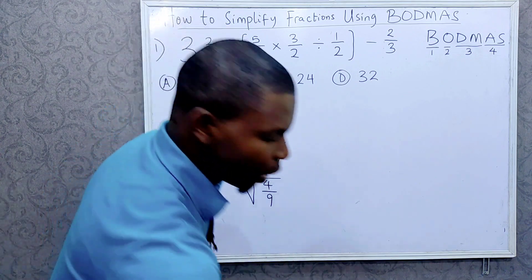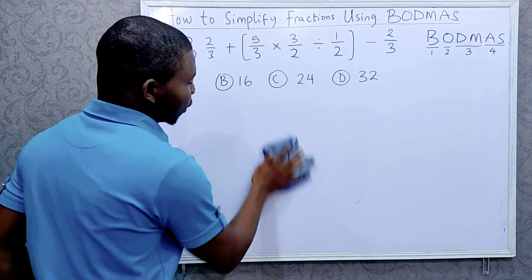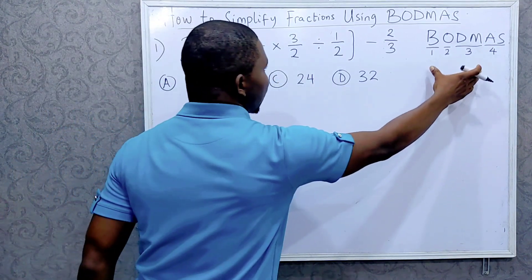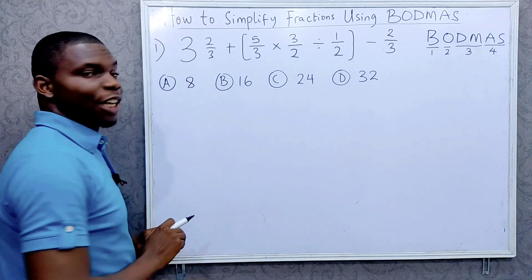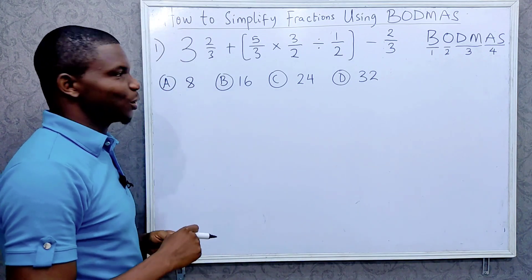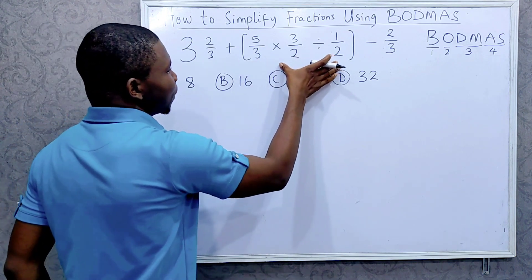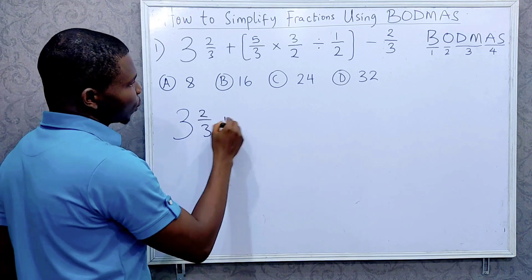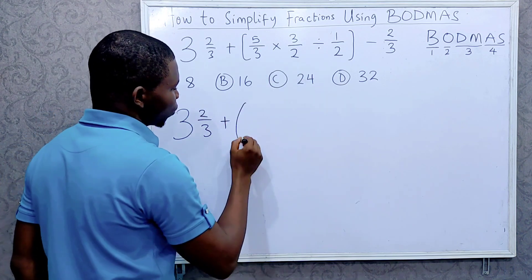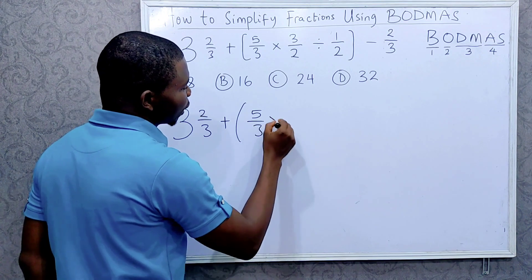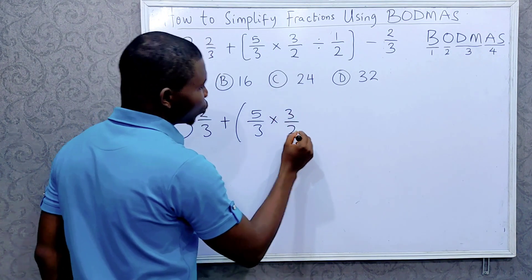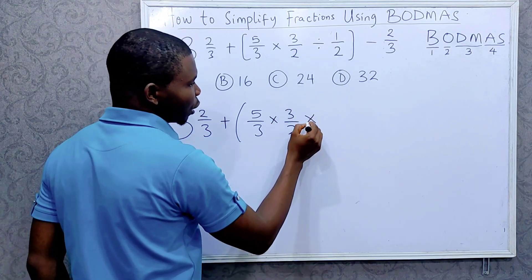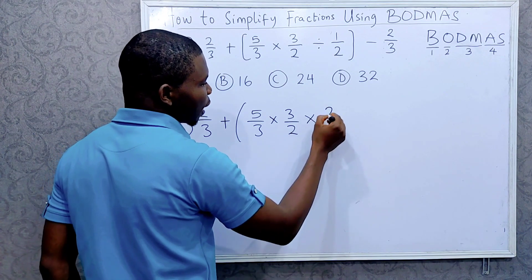You can pause this video and give this question a try using BODMAS and see what you get. Assuming you've done that, let's do it together. First we will deal with the brackets: 3 and 2 over 3 plus what's in the brackets is what we are dealing with now. This is 5 over 3 times 3 over 2.